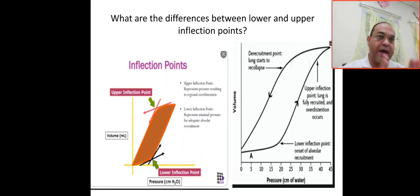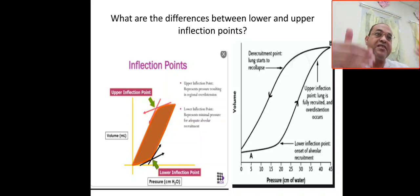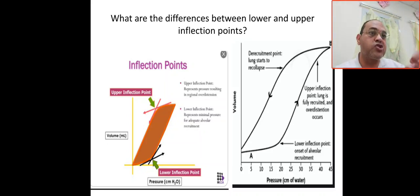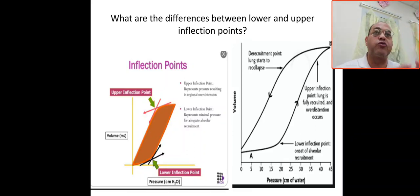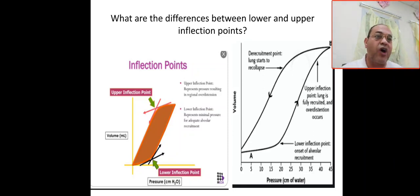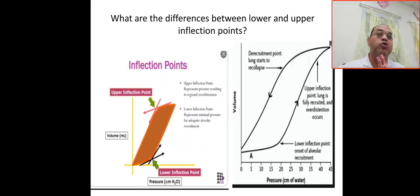Repeated opening and closing of the alveoli leads to shear injury, barotrauma, atelectrauma, and biotrauma. So the benefit of knowing the lower inflection point is that minimal pressure gives you huge volume for lung recruitment, optimizing alveolar recruitment and preventing these injuries.